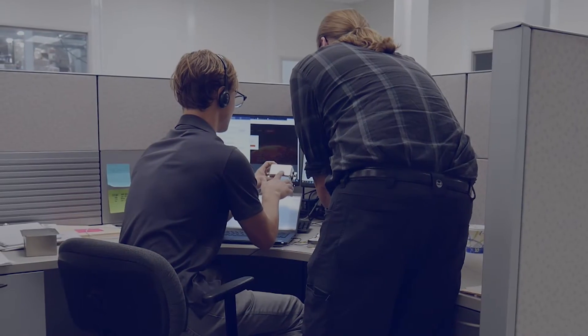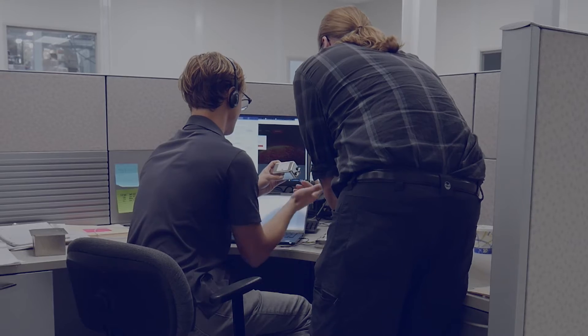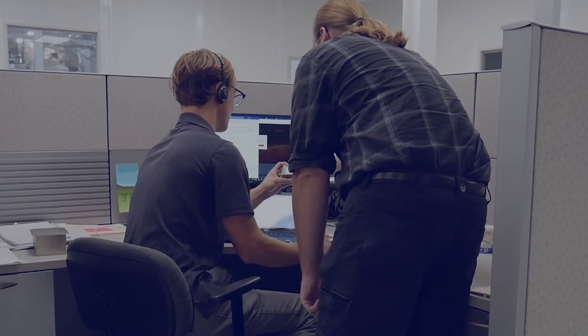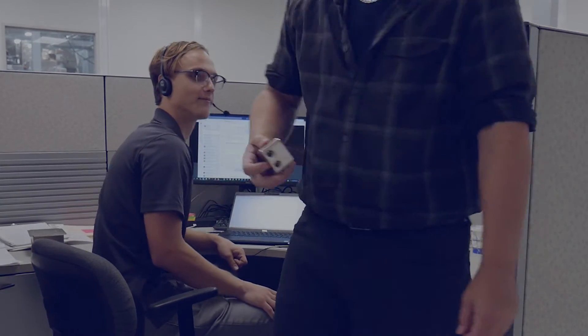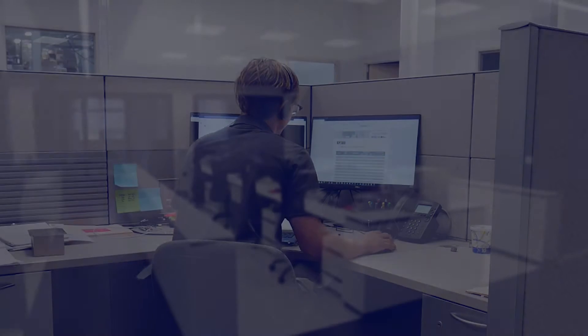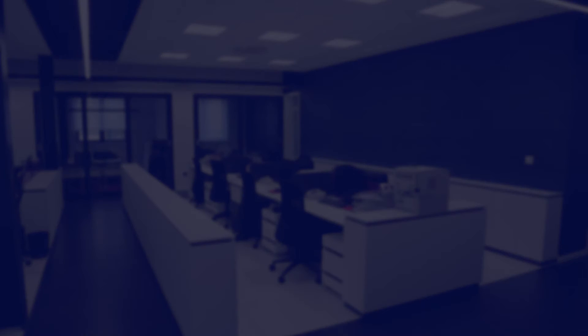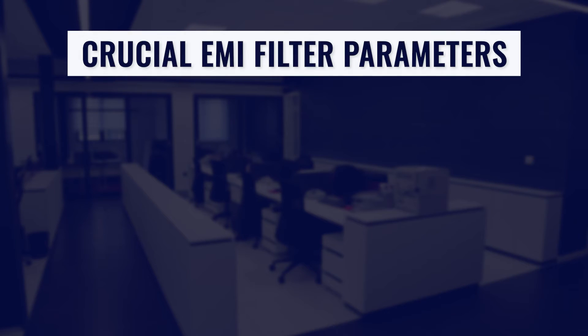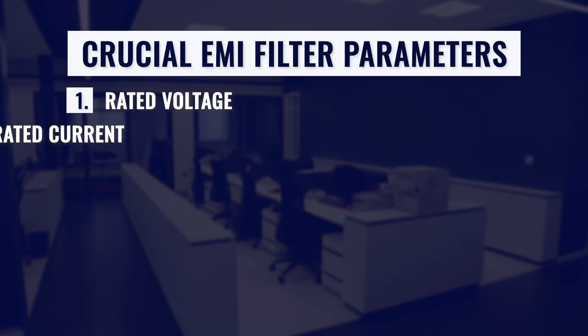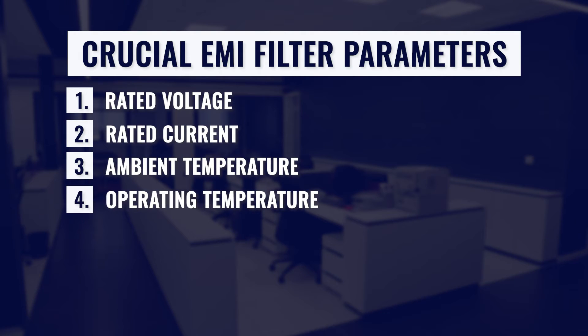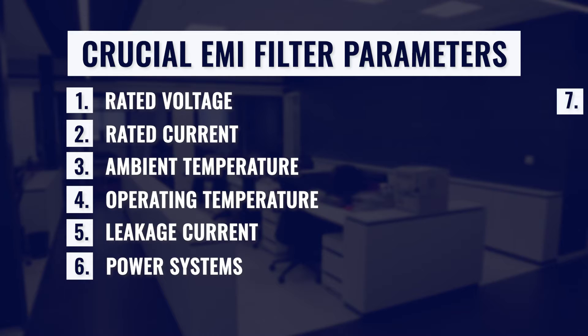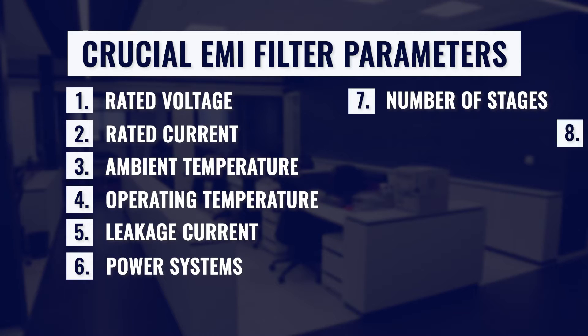The first step in selecting the right EMI filter for your application is reviewing the specifications and system requirements. These include electrical and operating requirements for your system. The crucial items in this category are: rated voltage, rated current, ambient and operating temperature, leakage current, power system, number of stages, and hi-pot voltage.